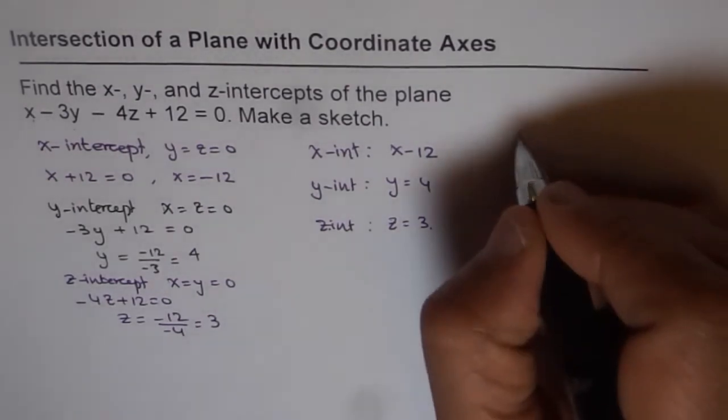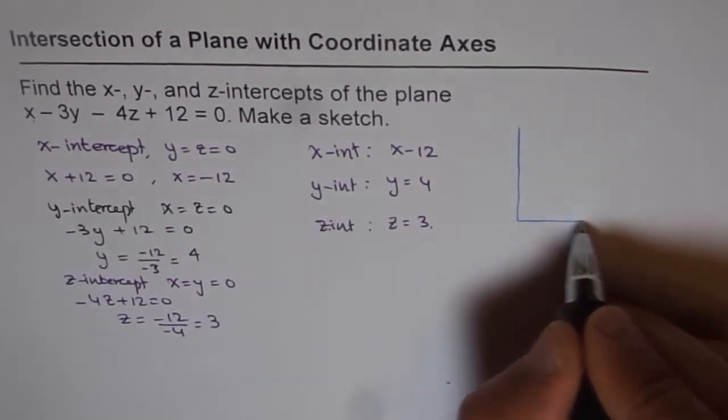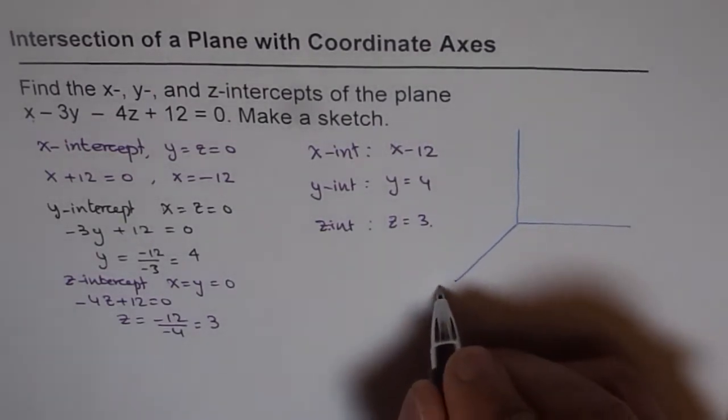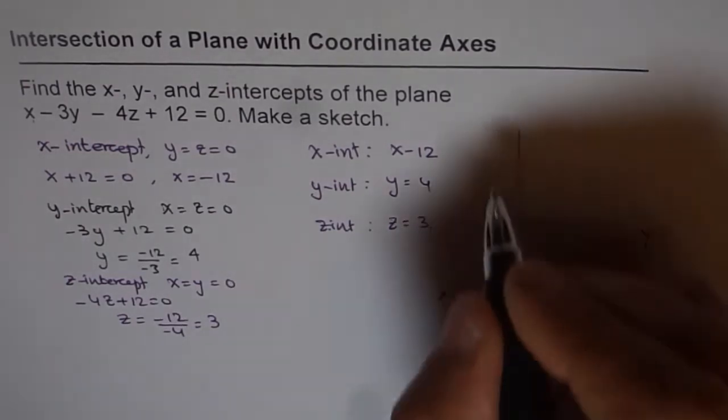Let's say this is our coordinate axis here. We have x-axis on this side, y and z.